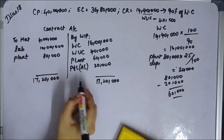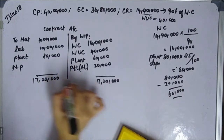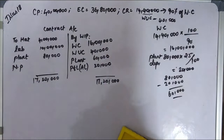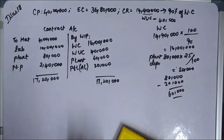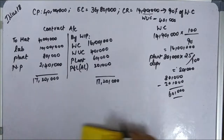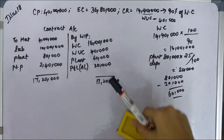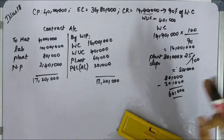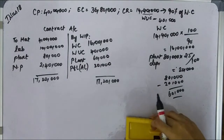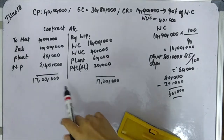After totalling, I get a difference of 2,40,000. This is the notional profit — notional profit is the estimated profit. So we have calculated a notional profit of 2,40,000.